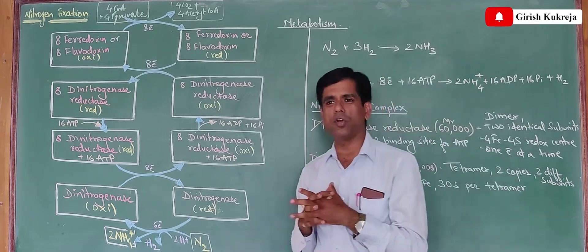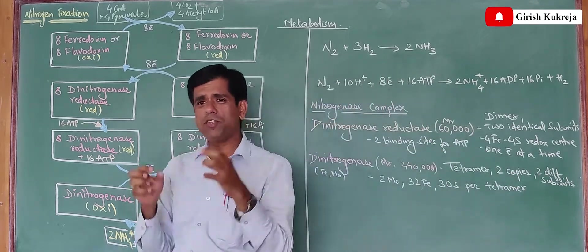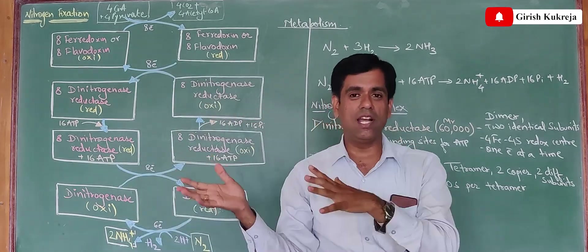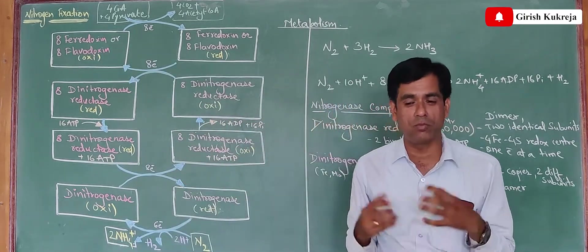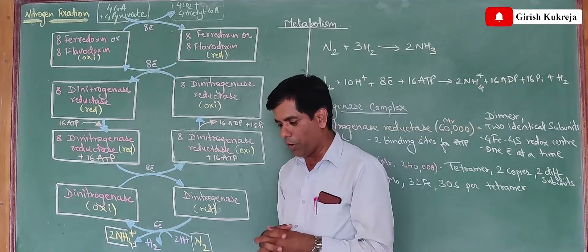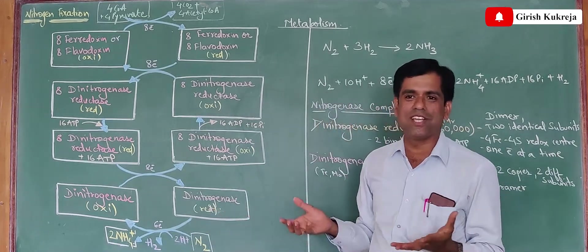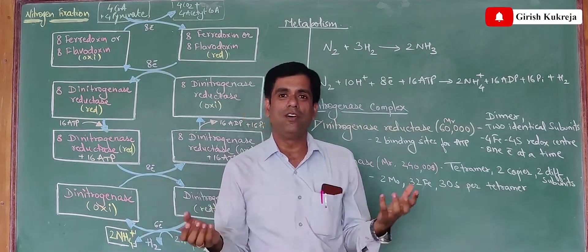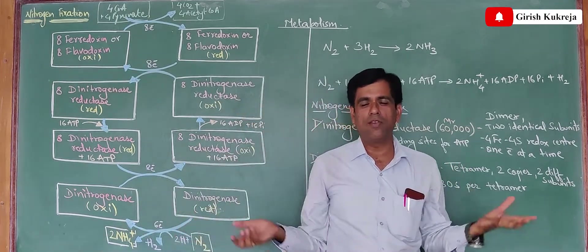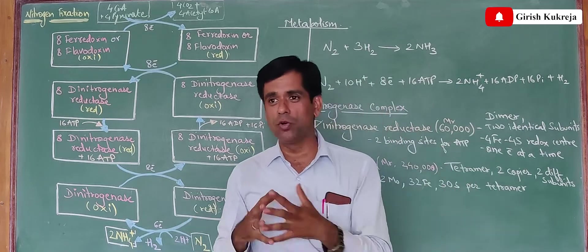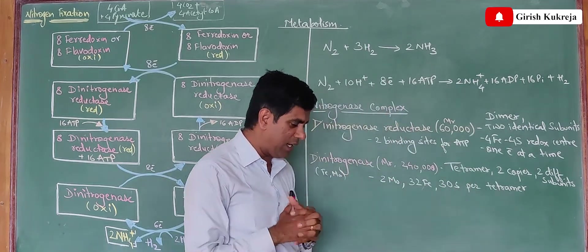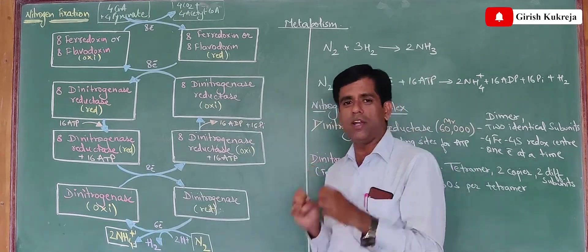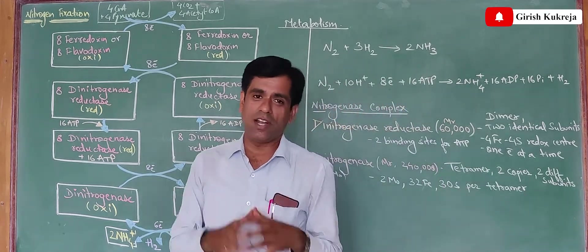In our earlier videos we have talked about the nitrogen cycle and one of the primary events which brings this nitrogen into the organic world, from the inorganic world, is the fixation of atmospheric nitrogen. Probably only bacteria are blessed with the ability to fix atmospheric nitrogen in this entire biosphere. It is only certain cyanobacteria, certain archaebacteria and certain eubacteria which are blessed with this quality of fixing the atmospheric nitrogen.